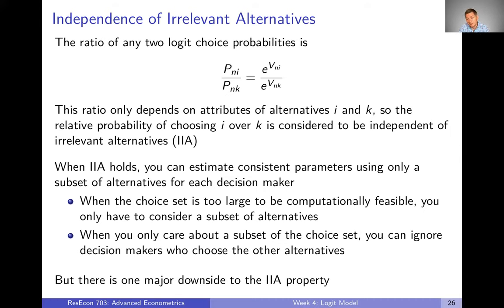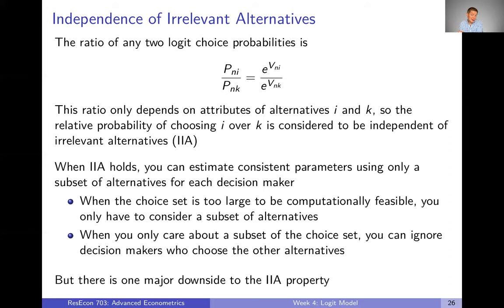This property has some nice implications and some not so nice implications. Starting with the good news: one thing that IIA means is that if you have a choice set that's too large to be computationally feasible — a classic example is Dan McFadden, Ken Train and Moshe Ben-Akiva looking at how people choose telephone plans and when they make calls. If you think about the dimensionality of when and how often people make calls, like every hour or every minute of the day, the dimensionality just gets huge — thousands if not millions of different choices.